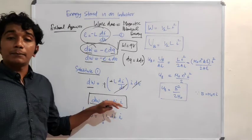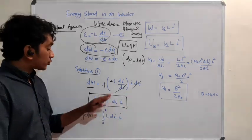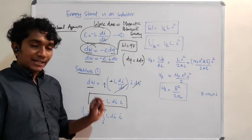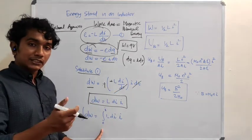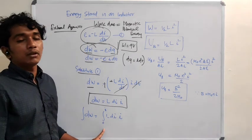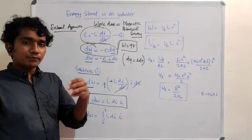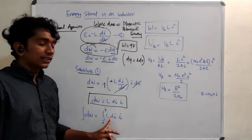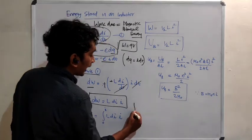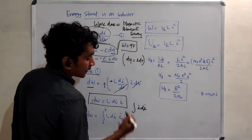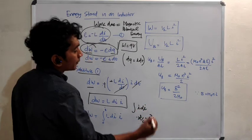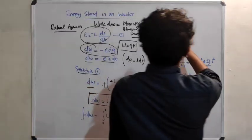This is a perfect integrable form. Integrating both sides, the integral of DW = integral from 0 to I of L·I·dI. The current starts from 0 and increases to maximum I when the switch is on. The integral of I·dI gives I²/2, so W = half L I squared.